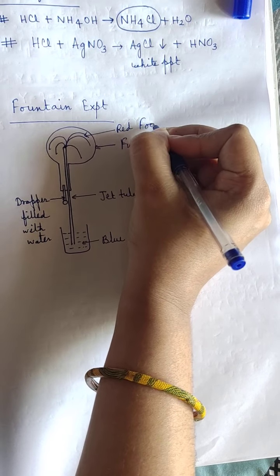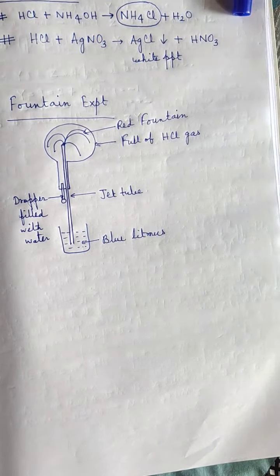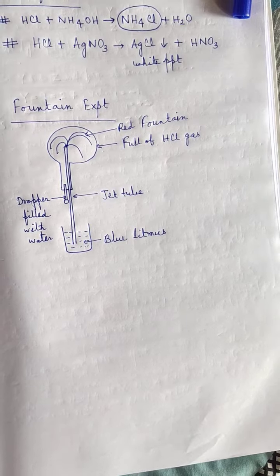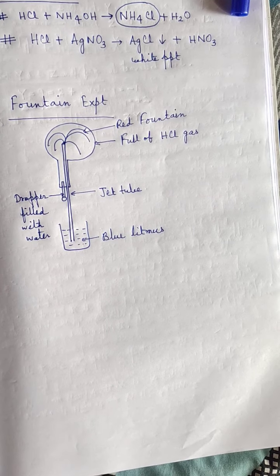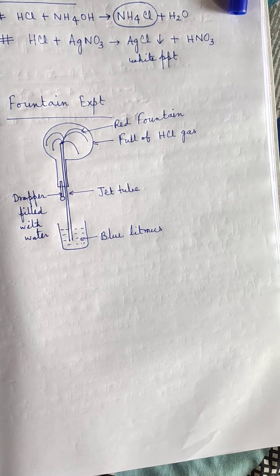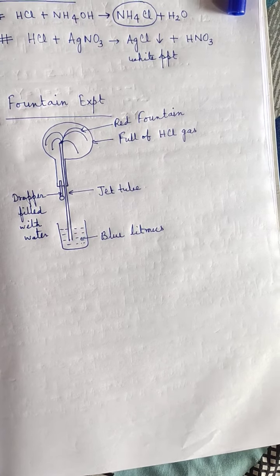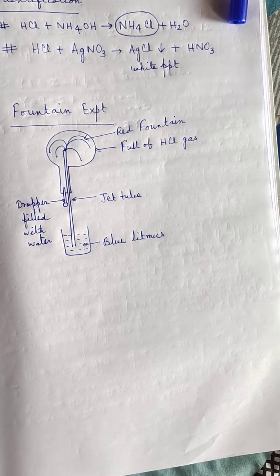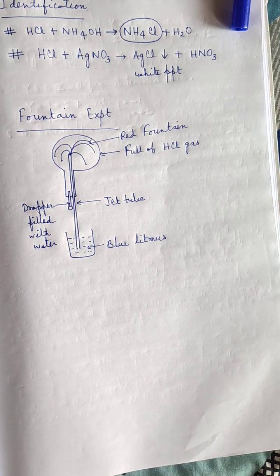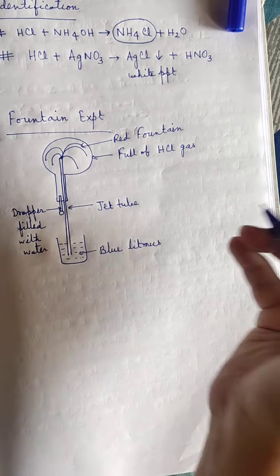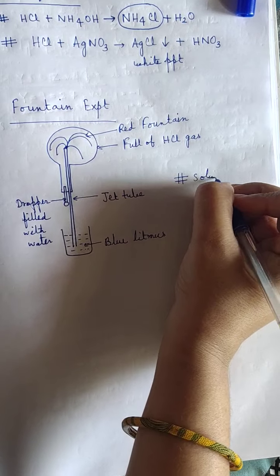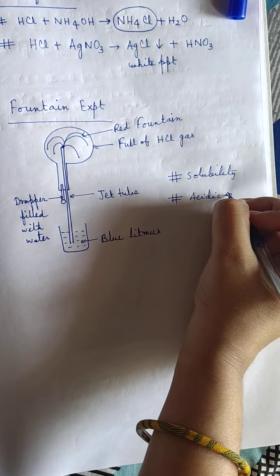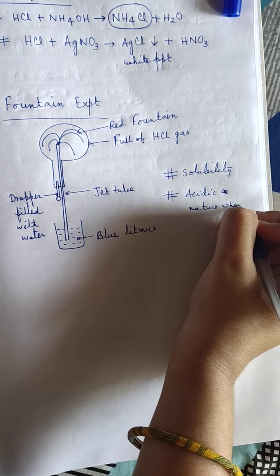The fountain falls inside and its color becomes red — we can observe a red fountain. As HCl gas dissolves in water it produces hydrochloric acid inside, demonstrating the acidic nature of the gas. The gas does not show acidic property in the gaseous state, but it does show acidic property when dissolved in water. Due to the acidic property the blue litmus becomes red. So the experiment demonstrates two things: one, solubility of HCl in water; and two, the acidic nature of the gas when dissolved in water.